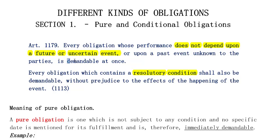What it says is that an obligation is demandable at once when it does not depend upon a future or uncertain event. And when an obligation contains a resolutory condition, it is also demandable. So by this provision, we can readily see that an obligation is immediately demandable if it is not depending upon a future or uncertain event, or if it contains a resolutory condition. That is what we get from the provision of Article 1179.